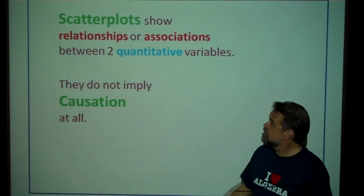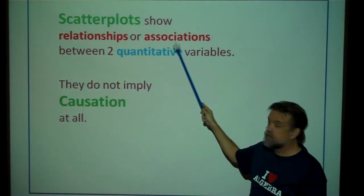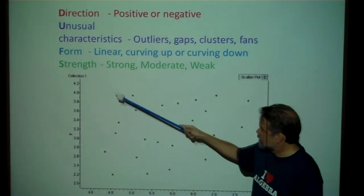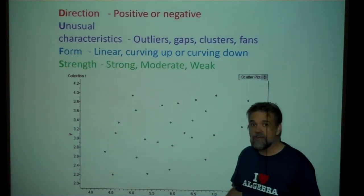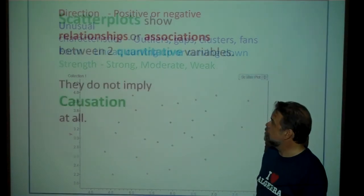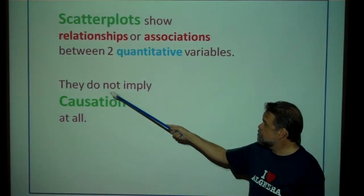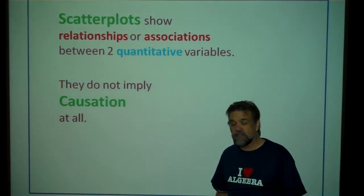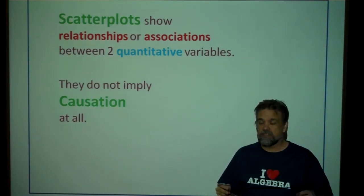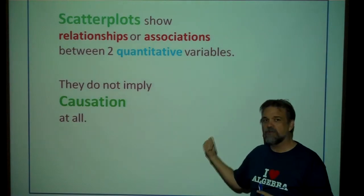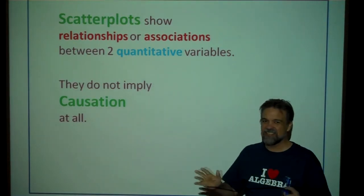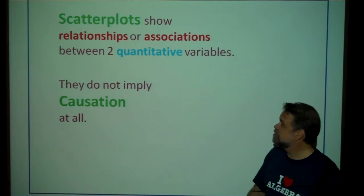Scatter plots show us relationships or associations between two quantitative variables. Notice we have a numerical scale on both axes — this is not categorical data, this is quantitative data. So don't try to make a scatter plot with categorical data. Also, scatter plots do not imply causation at all. We're not saying that doing better on the verbal part of your SAT makes you do better on the math part — it just shows that there's an association.